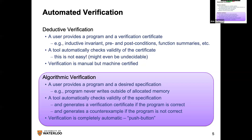Algorithmic verification — where model checking comes from — is push-button. The user specifies the property at a very high level: 'my program should be memory safe,' 'the airplane doesn't crash.' The system figures out how to break it down, analyze it, and give a result. Given theory and practice, this means giving up on the kinds of properties checked — focusing on more generic, shallow properties like memory safety — and that's what makes it scale.